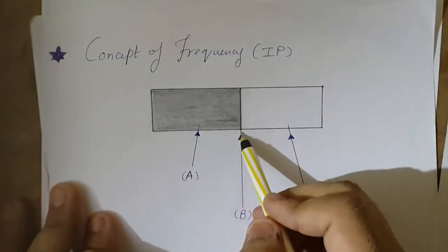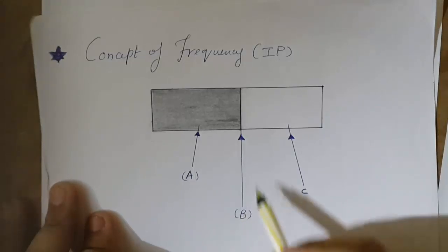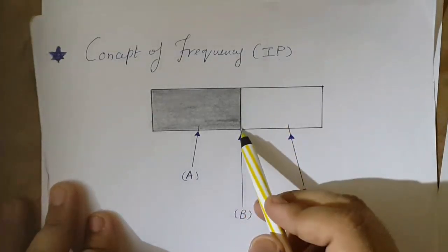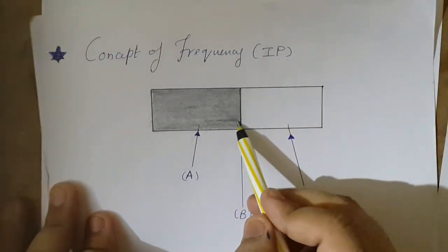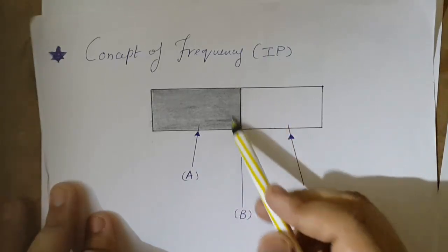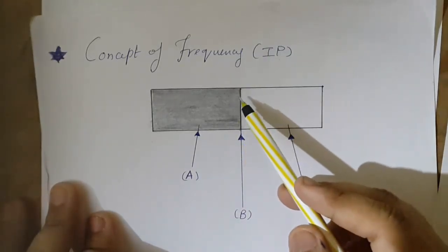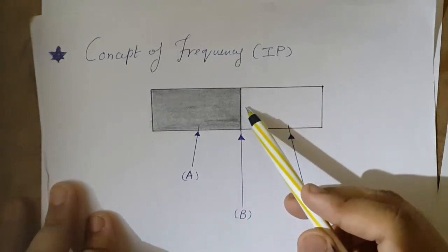When I come to this portion that I have represented with B, I get a sharp change in intensity from black to white. So here I have encountered high frequency because there is a sharp change of intensity.